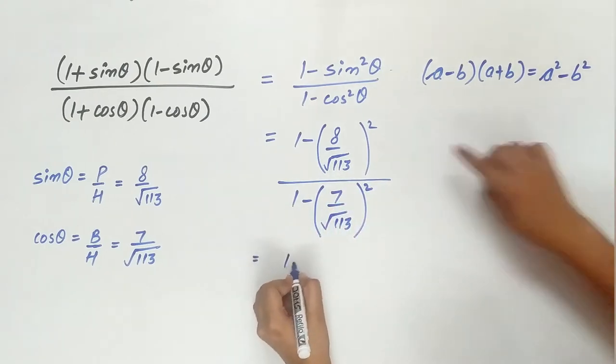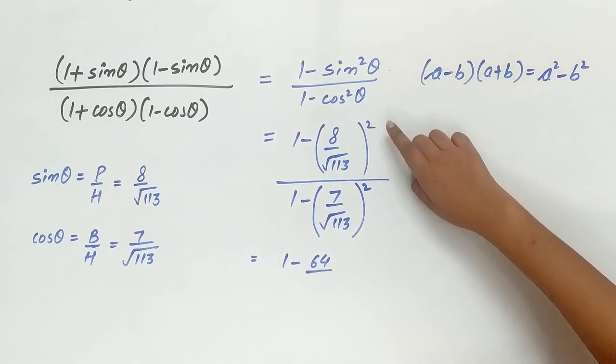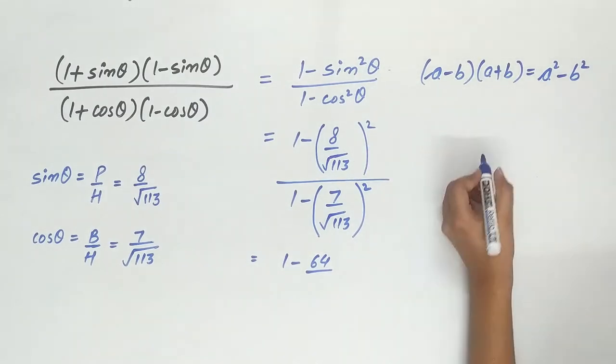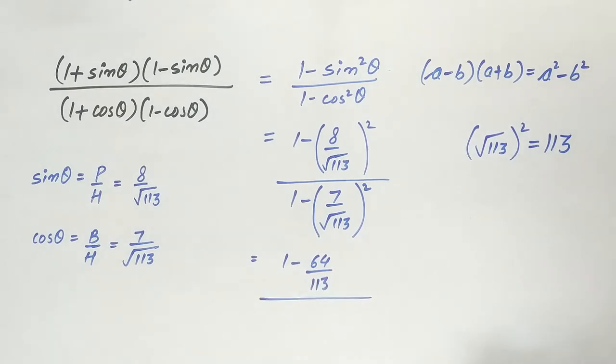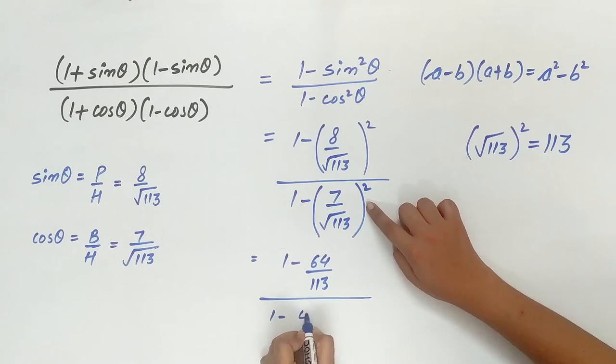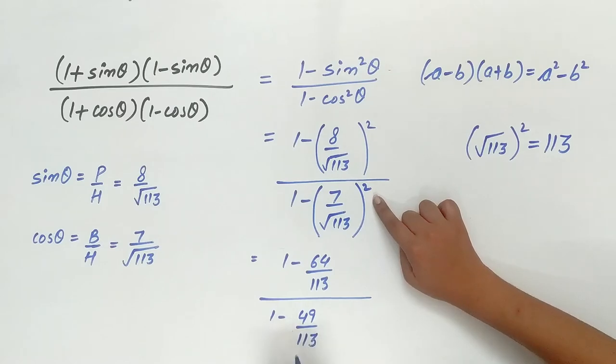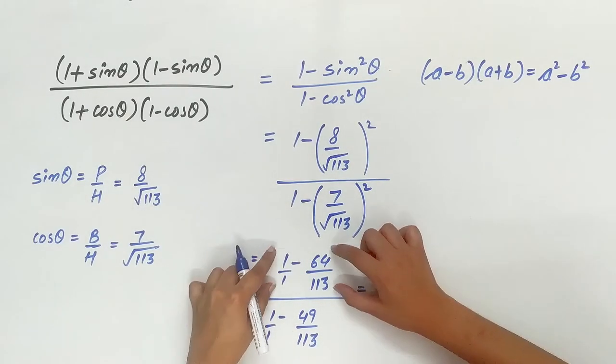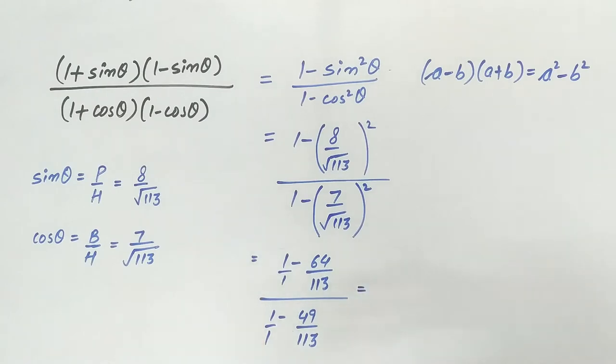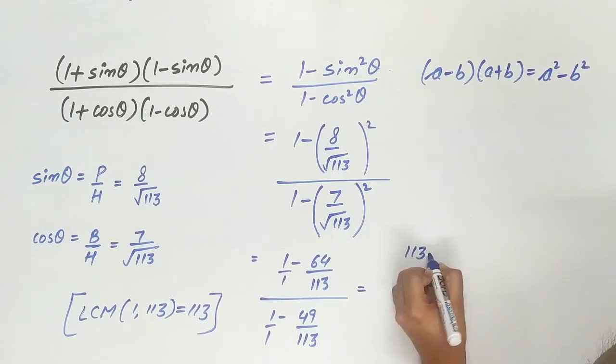So, 1 minus 8 square is 64, square of square root of 113 is 113. Since denominator of both the fractions are different, take the LCM. LCM of 1 and 113 is 113. So, 113 minus 64 divided by 113.